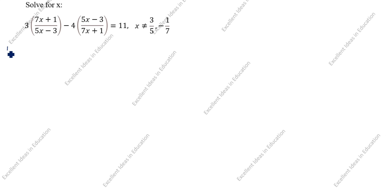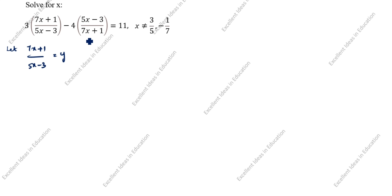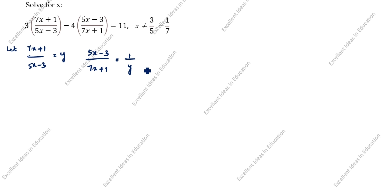To solve this, let (7x + 1)/(5x - 3) = y. Then (5x - 3)/(7x + 1) is its reciprocal, which equals 1/y.